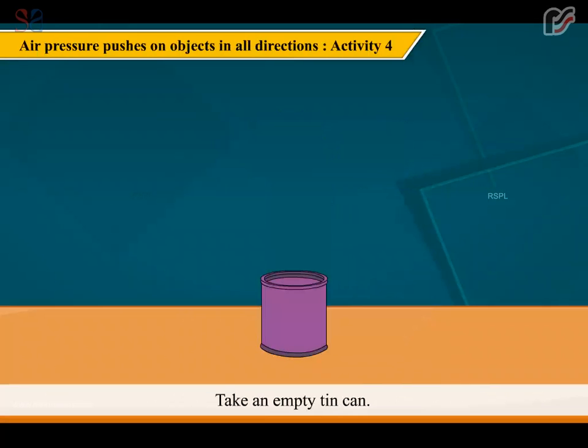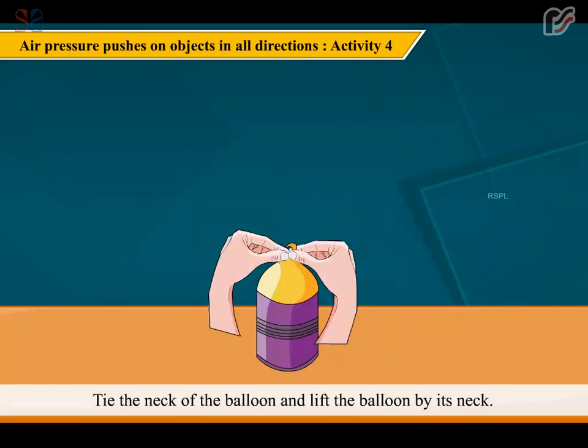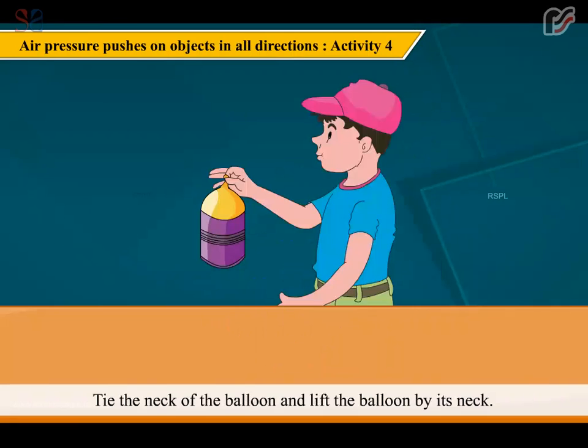Take an empty tin can. Insert a balloon in it and blow air into it. Fit the can. Tie the neck of the balloon and lift the balloon by its neck. What do you see? You see that the tin can also gets lifted because air inside the balloon is pressing on all sides of the tin can.